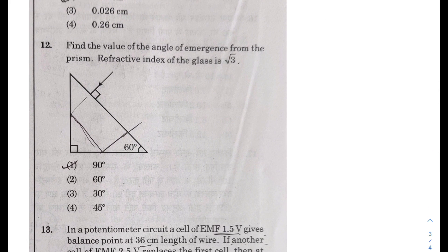Next, find the value of the angle of emergence from the prism. Refractive index of the prism is root 3. So here you see it is normal incidence. So this angle is 90 degrees, this is 90 degrees. From the geometry this angle comes out as 30, this will come out as 60, and if I draw the normal from here this angle would be 30 degrees.